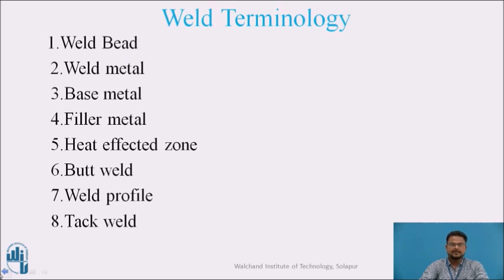Weld bead is the solidified pool of metal that includes a part of the base metal and the majority of the filler metal. In fact, it is an alloy of the base metal and filler metal, which is stronger than the base metal. Weld metal is the alloy comprising the filler and base metal that forms the weld bead. There are two base metal pieces that are to be joined by welding. Filler metal is the metal used to melt and form the joint with the base metals; they are mostly in the form of electrodes or filler rods.